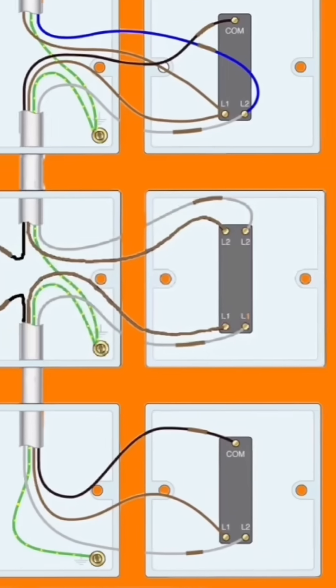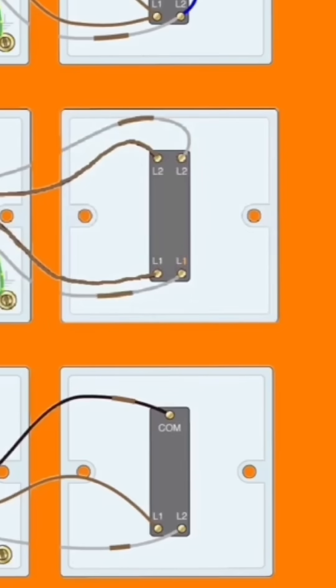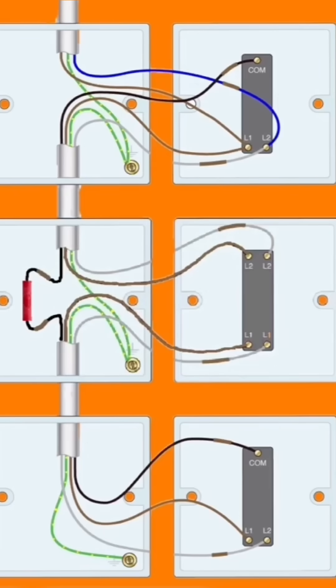Three core coming out the intermediate switch down to the final two-way switch has the standard configuration for connecting. In our case, we're using black as common, and we've got brown and gray with brown sleeving connected in L1 and L2. Remembering again, it wouldn't have mattered if brown was in L2 and gray was in L1. The drawing shows the other way around, so this would give us two-way and intermediate switching of a lighting point.